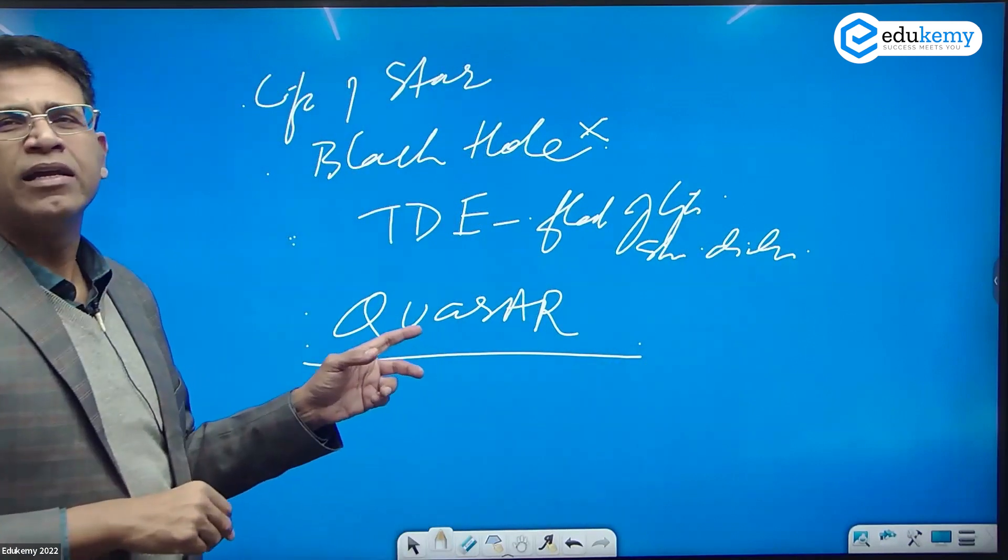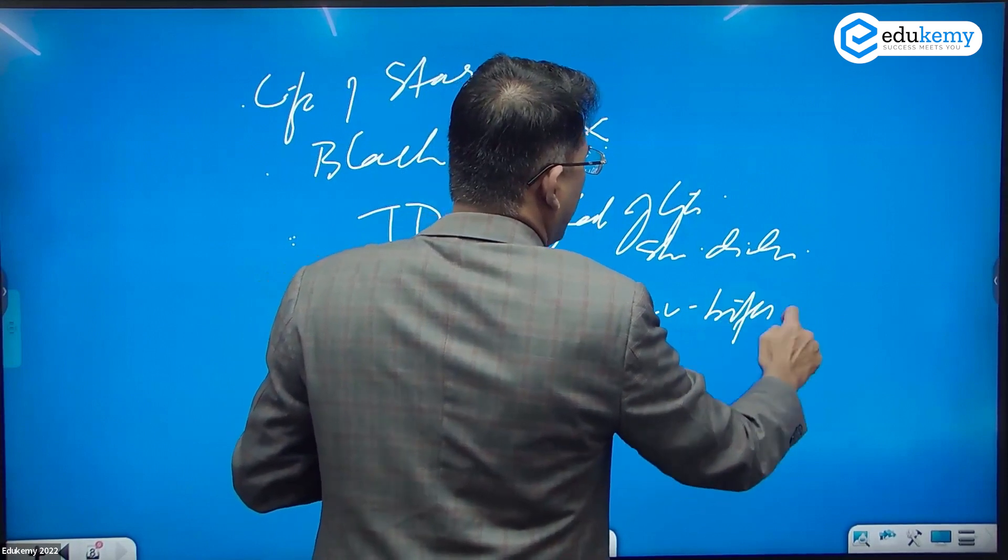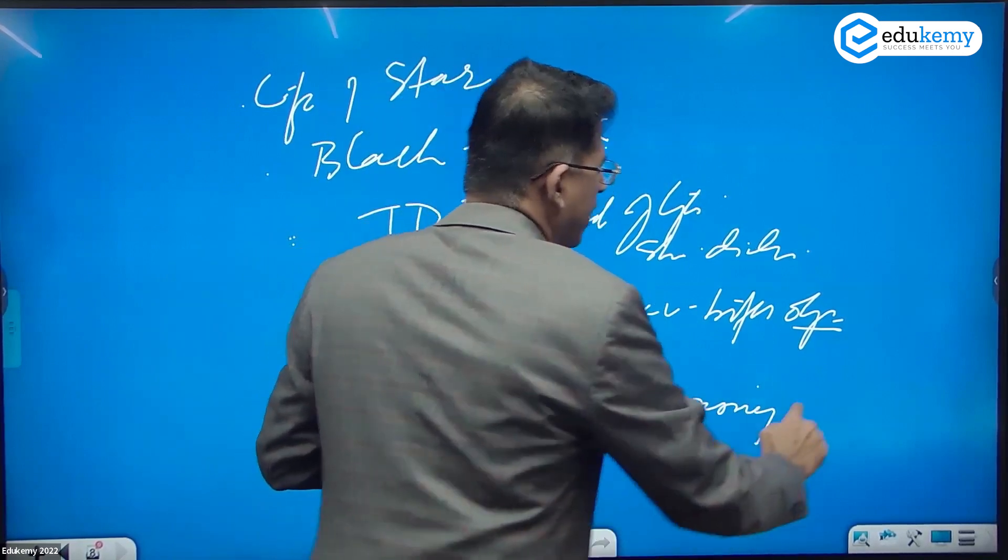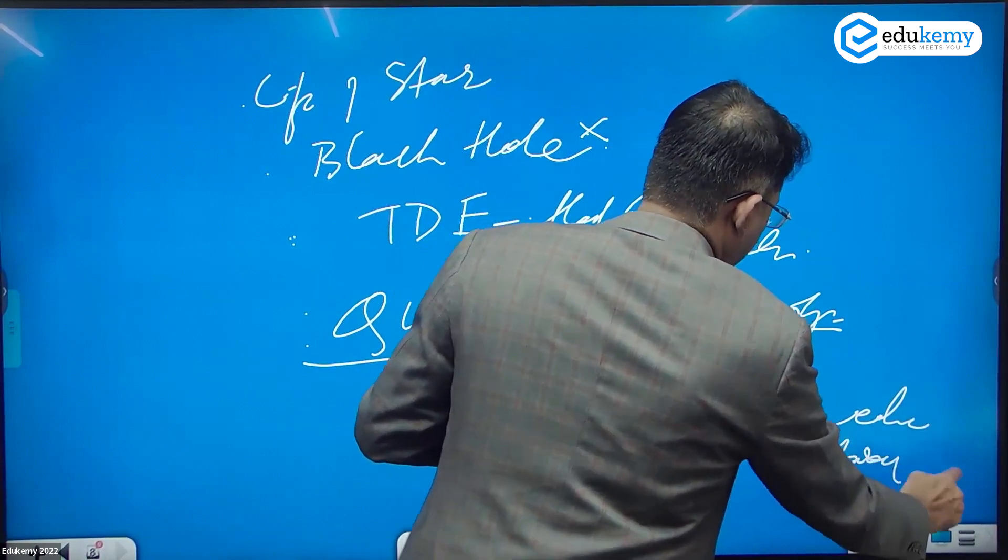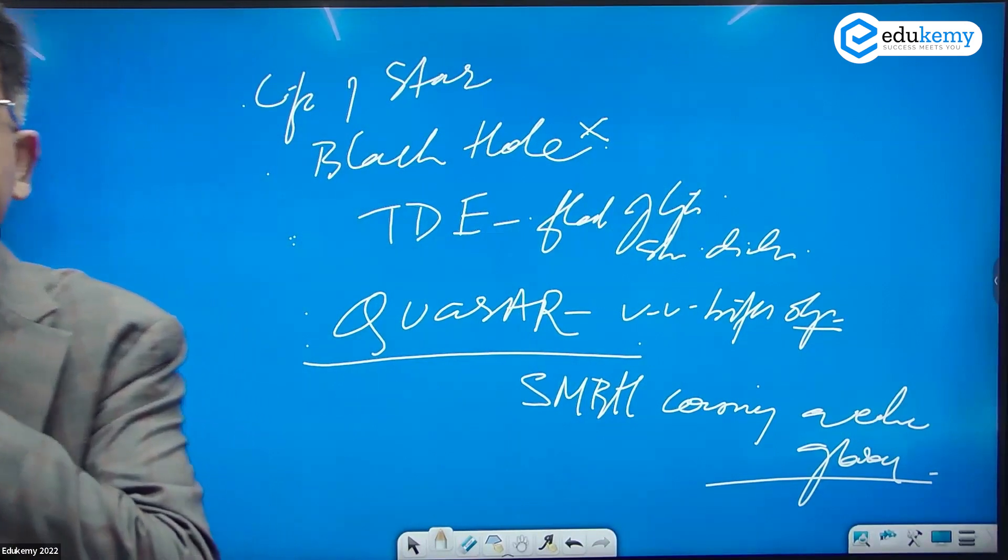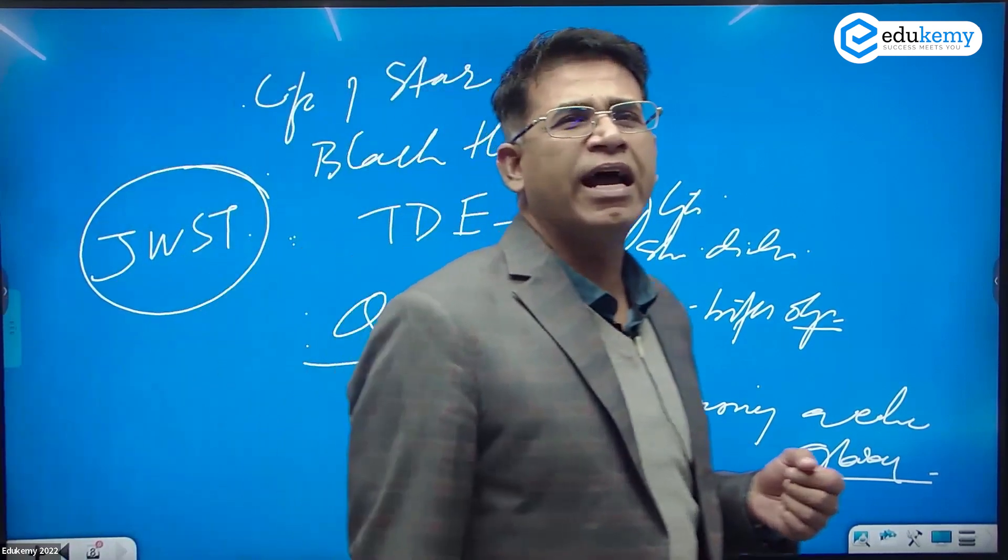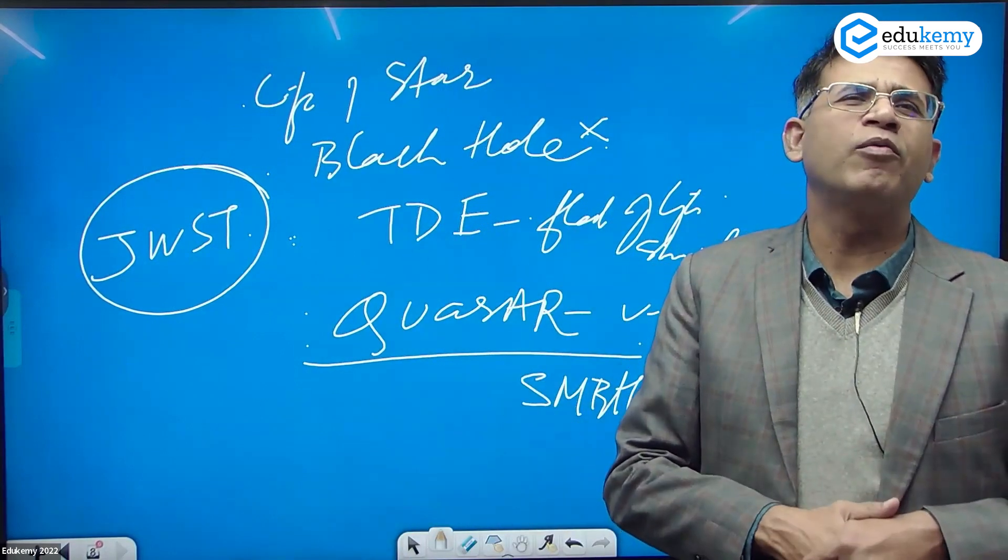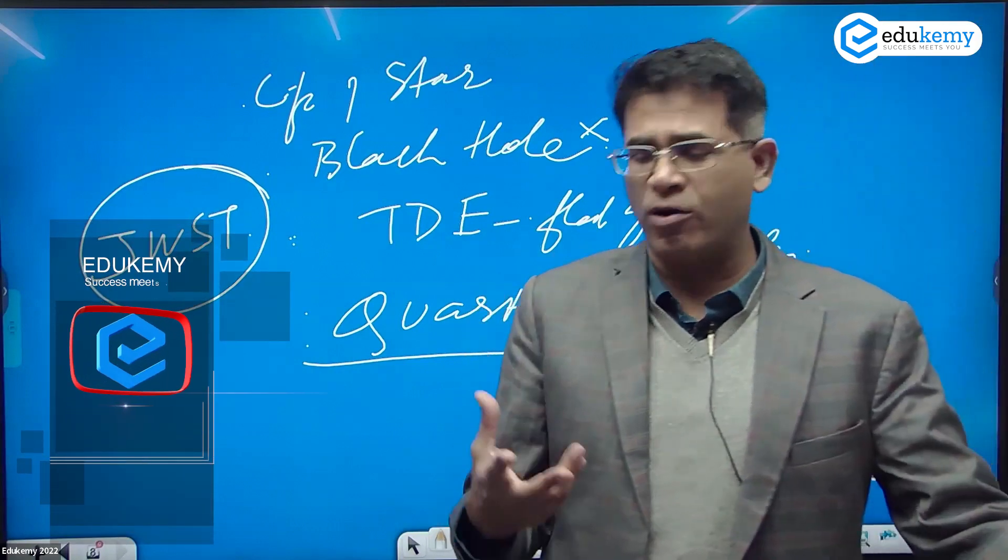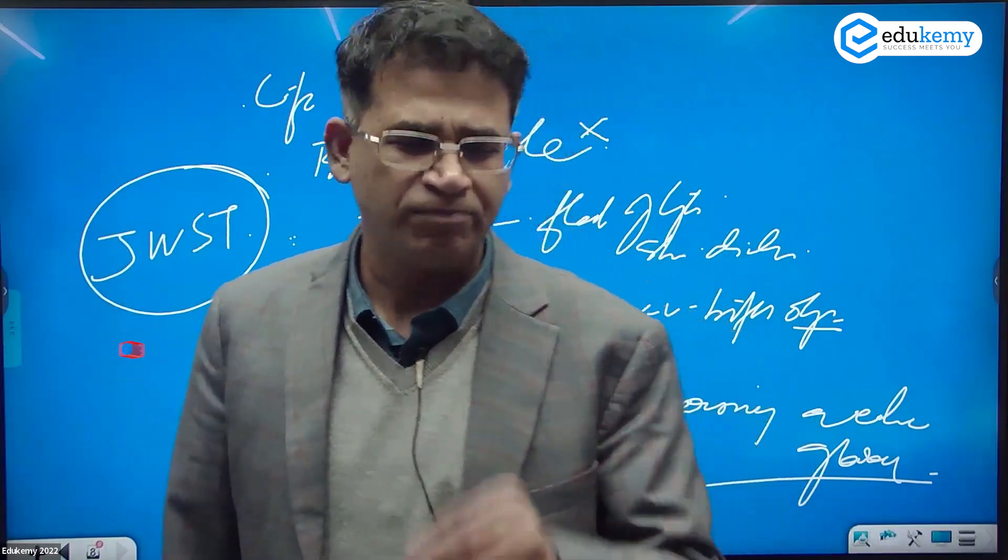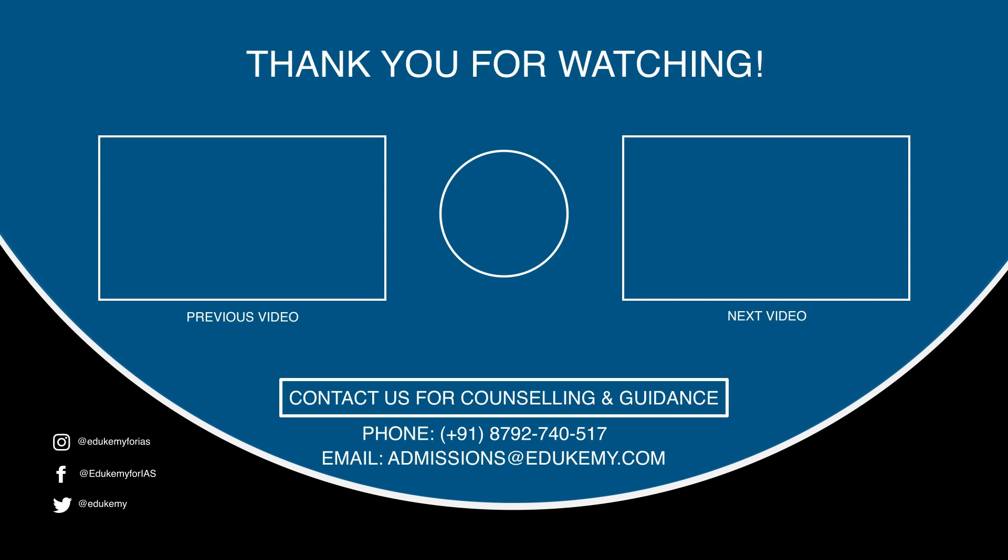A quasar is a very bright object - essentially a supermassive black hole that is consuming an entire galaxy. Some of these things have been observed by James Webb Space Telescope. JWST has observed some of these events, and that's how we can discover the origins of our solar system much better once we decode some of these images and get to the origins of the universe.